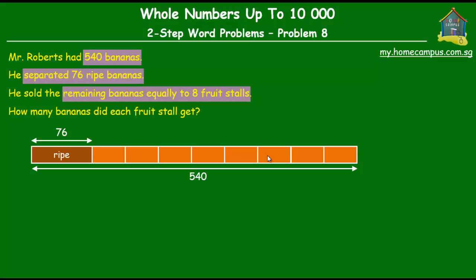Now what we have to find out, the main question is how many bananas each fruit stall got. Which means how many bananas does each of these orange little units stand for? Now after drawing the model, it's quite clear that we have to first find out how many bananas remain after separating out the 76 ripe bananas.